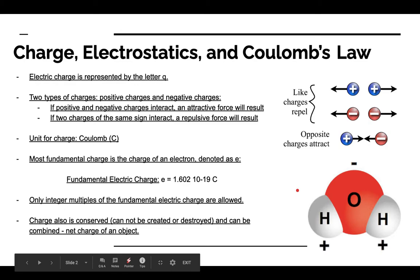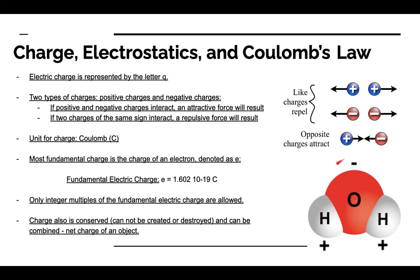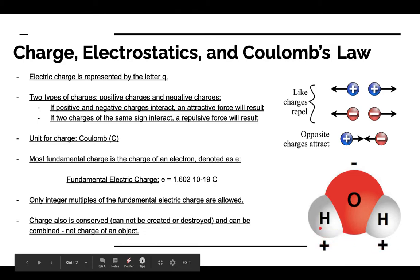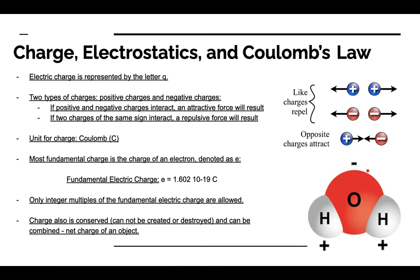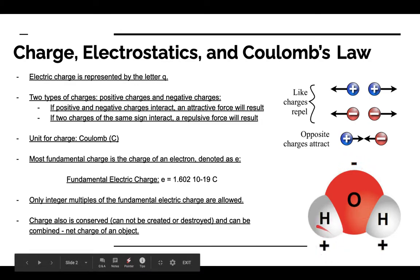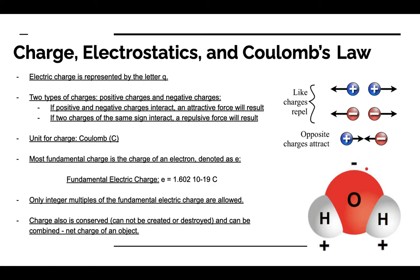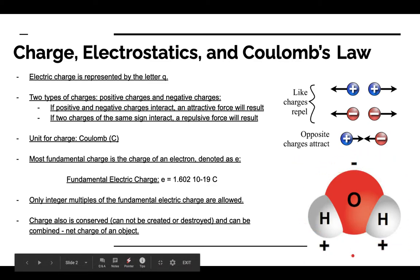As an example of net charge, consider a water molecule. You may have learned in chemistry that a water molecule has a negative charge at one end and two positive charges at the other ends on the hydrogens. Parts of the molecule are charged — this is what we call charge polarization — but the overall net charge is zero: negative two plus positive one plus positive one equals zero. That's why you don't get shocked by water molecules.